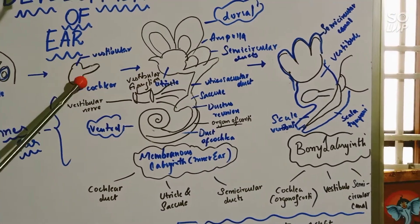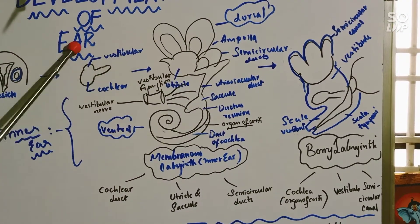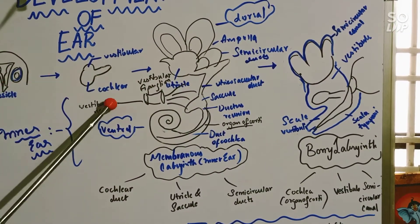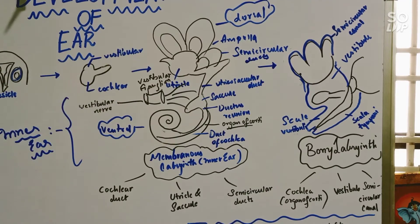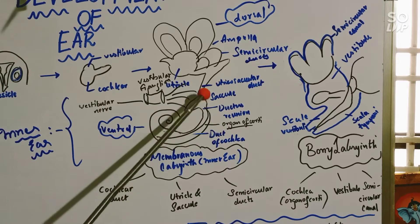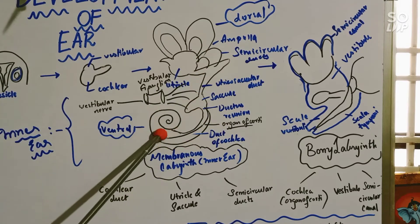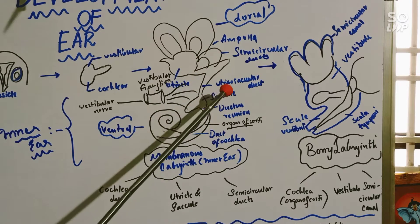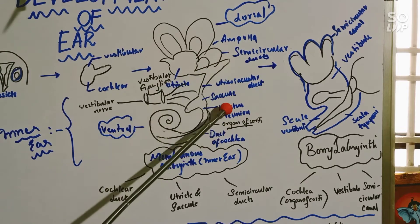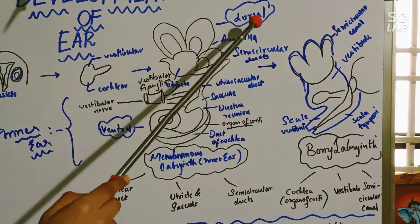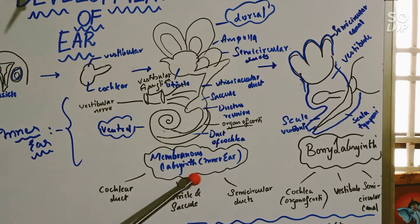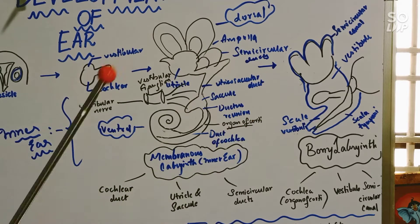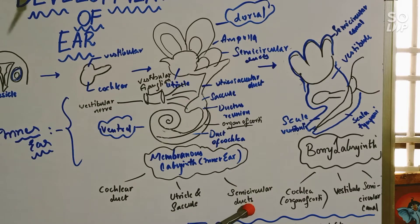Here you can see the ventral part and the dorsal part of the otic vesicle. The ventral part has a cochlear part and the dorsal is the vestibular. Here you can see the cochlea is rounded in this structure. And here is the utricle, saccule, and ampulla of the semicircular ducts. So the parts of the membranous labyrinth of the inner ear are the cochlear duct, utricle, saccule, and semicircular ducts.